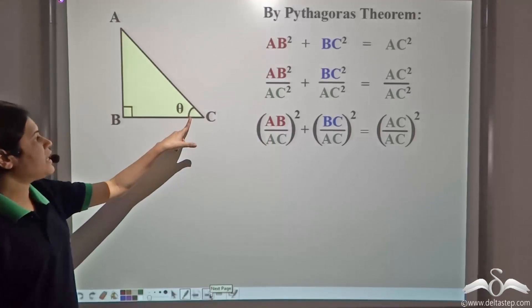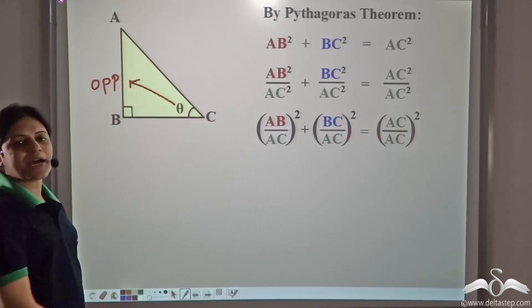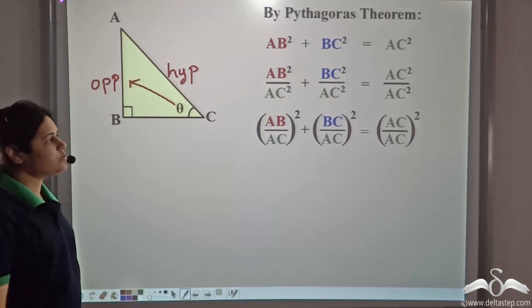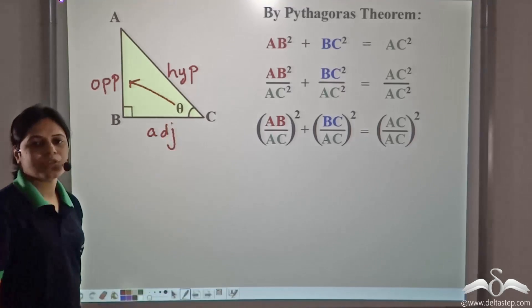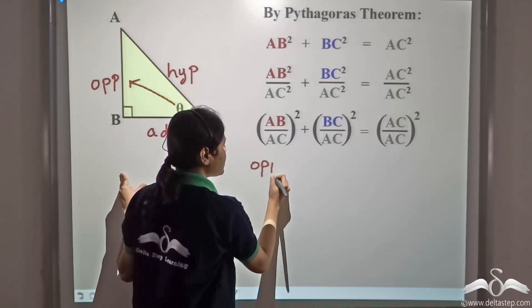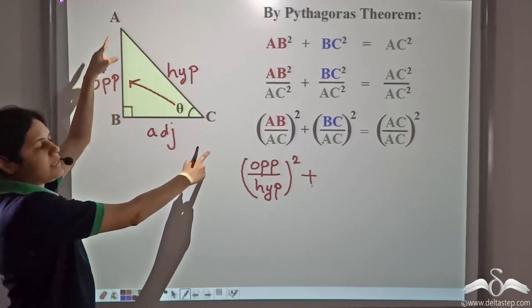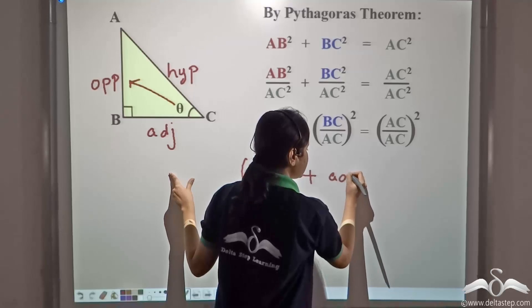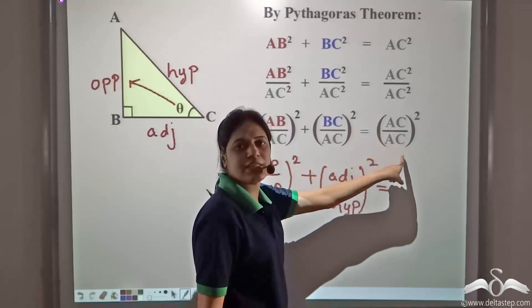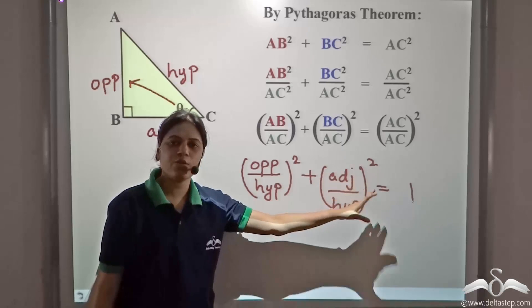Now, AB/AC — if we consider angle theta, then AB is the opposite side of angle theta. The side opposite the right angle is the hypotenuse. So, AC is the hypotenuse and BC is the adjacent side. So, AB/AC is equal to opposite by hypotenuse, and BC/AC is equal to adjacent by hypotenuse. This whole expression equals 1, since AC/AC is 1 and 1² is 1. So we have: (opposite/hypotenuse)² plus (adjacent/hypotenuse)² equal to 1.